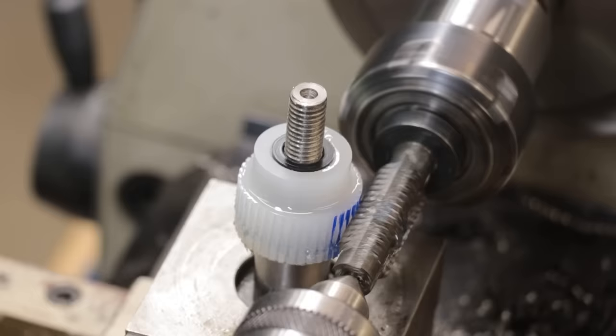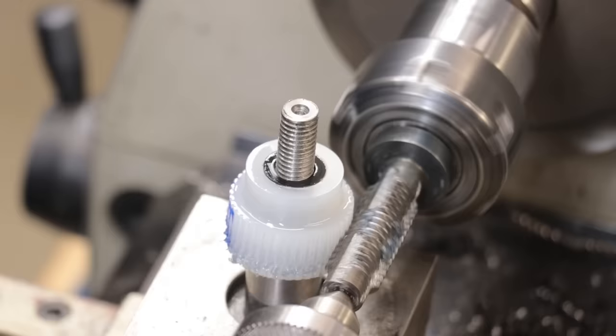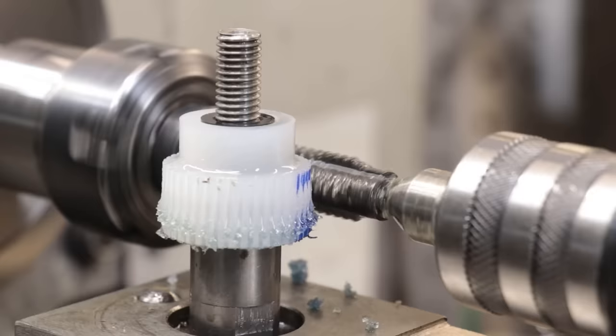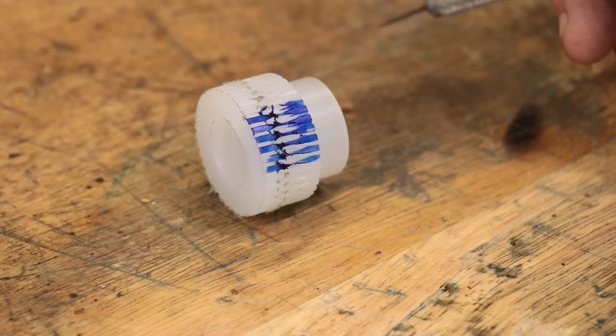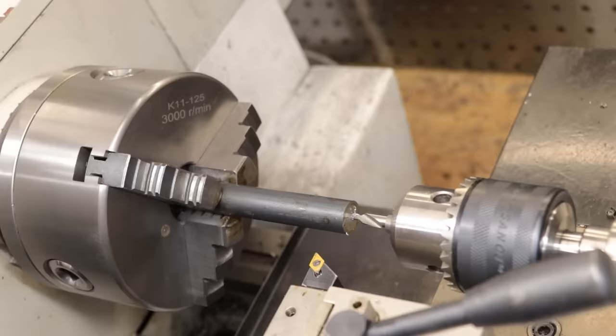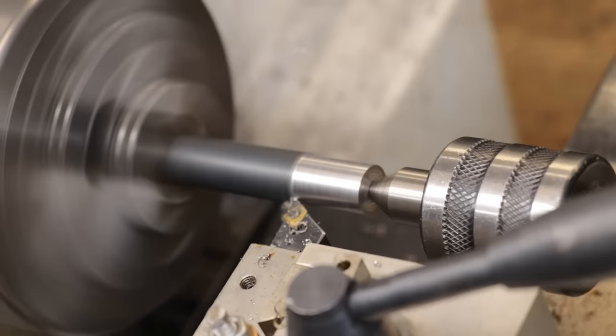I'll then use the free-hopping setup on the lathe to complete the basic worm profile. And overall that came out looking great, except I forgot just how difficult it was to deburr acetyl, so I think I'm just going to leave it there. Now back on the lathe, I'm going to cut the worm screw using the 20 degree pressure angle cutter that I previously ground up.